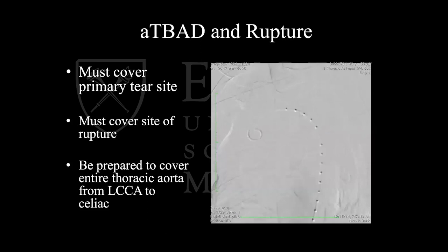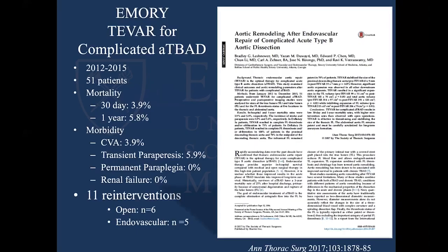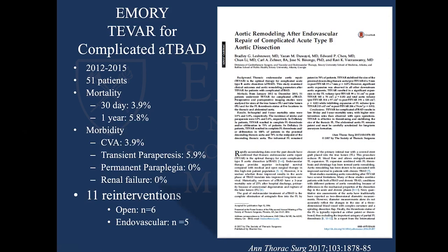Here is a paper we wrote in 2017 of our first 51 patients stented for complicated type Bs. We had two mortalities and a third at one year — these were all visceral and mesenteric malperfusions. Low stroke, low paraparesis, no paraplegia, no renal failure. You should be able to get all these patients' kidneys to work, even if they come in with renal failure. We follow them yearly — there have been 11 reinterventions, six open and five endovascular. I don't consider that a failure with endovascular therapy; it's the cost of doing business.